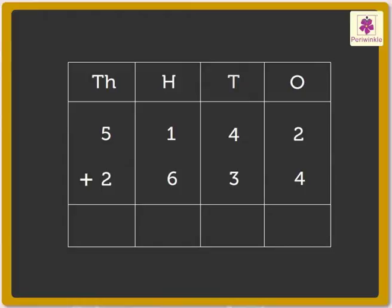First, we add the numbers in the ones column: 2 and 4. We get the number 6. Write it in the ones column. Next, add the numbers in the tens column: 4 and 3. We get 7, which we write in the tens column.